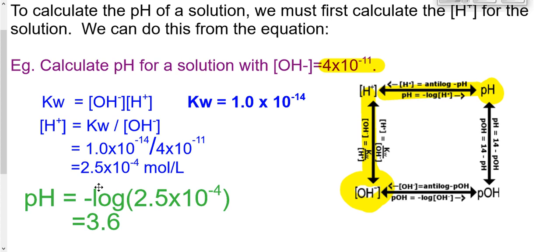Your answers should always make sense — ask yourself, am I working with an acid or a base? For an acid, pH is less than 7. For a base, pH is greater than 7. Let's take a look at another example.